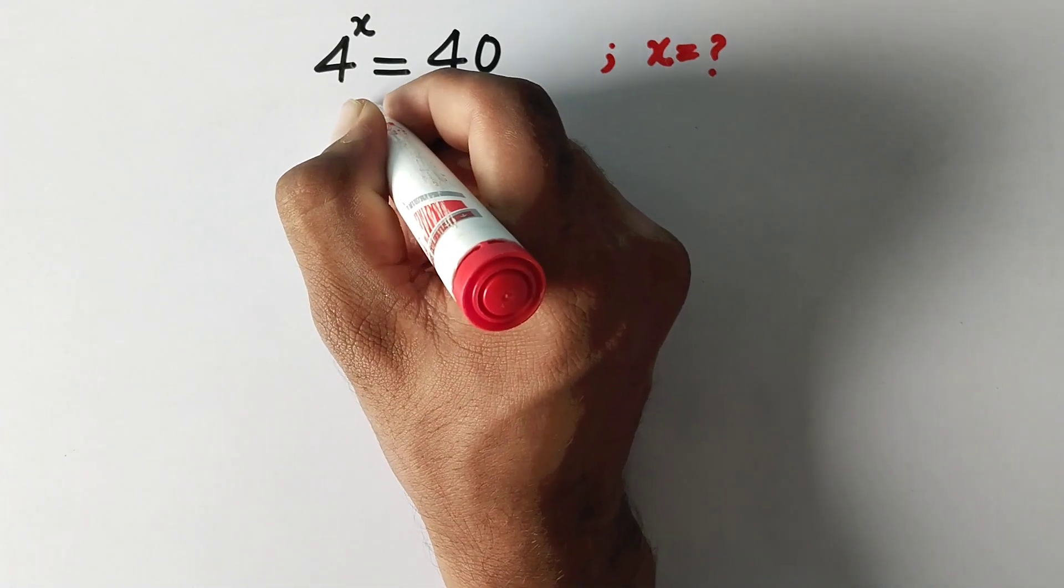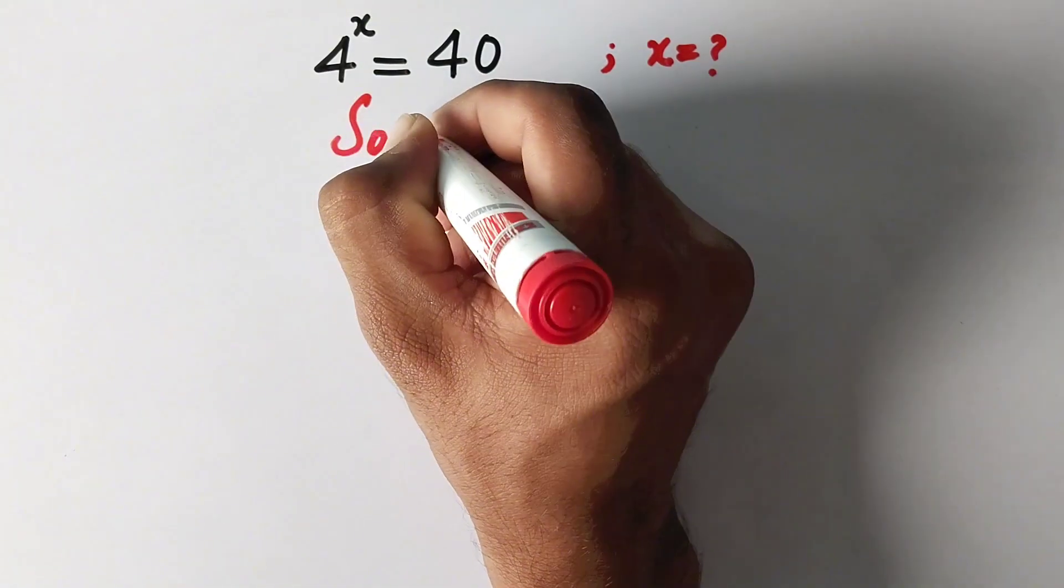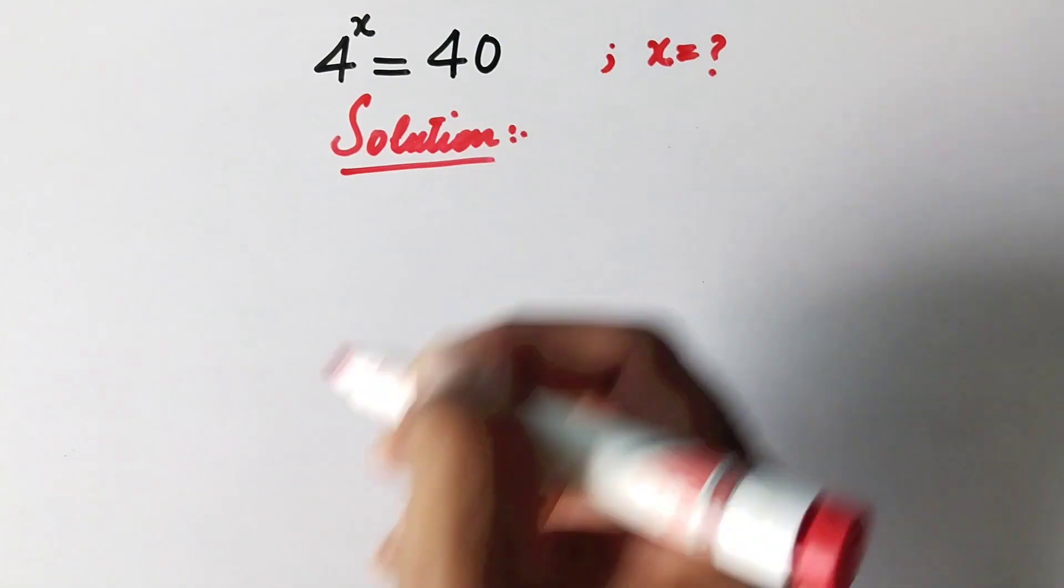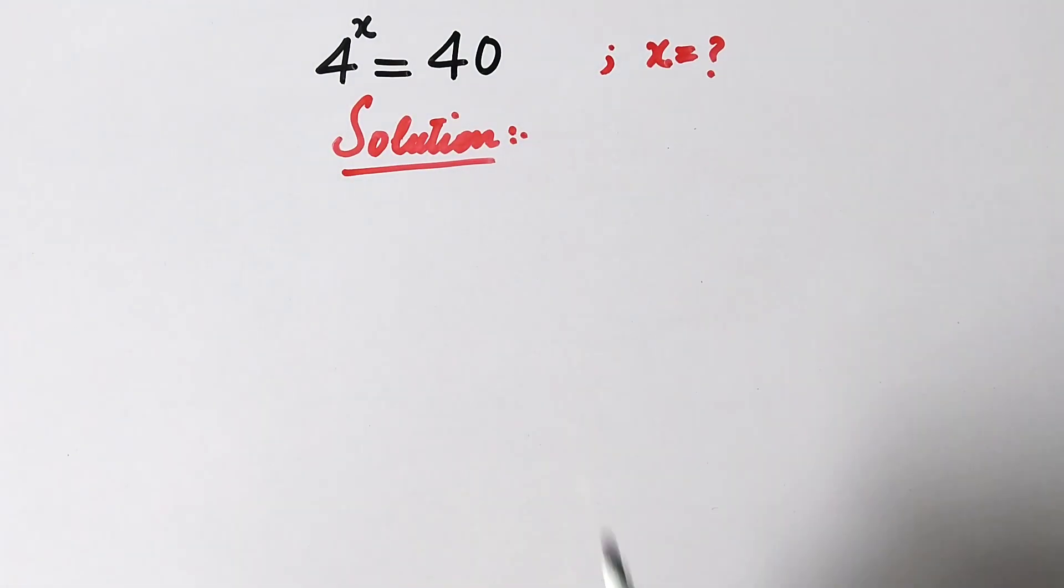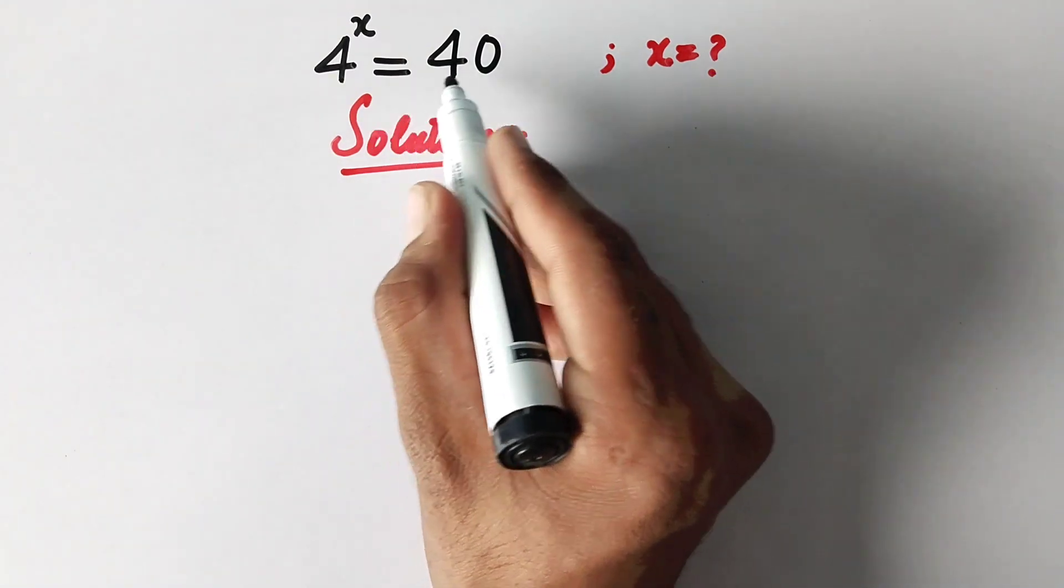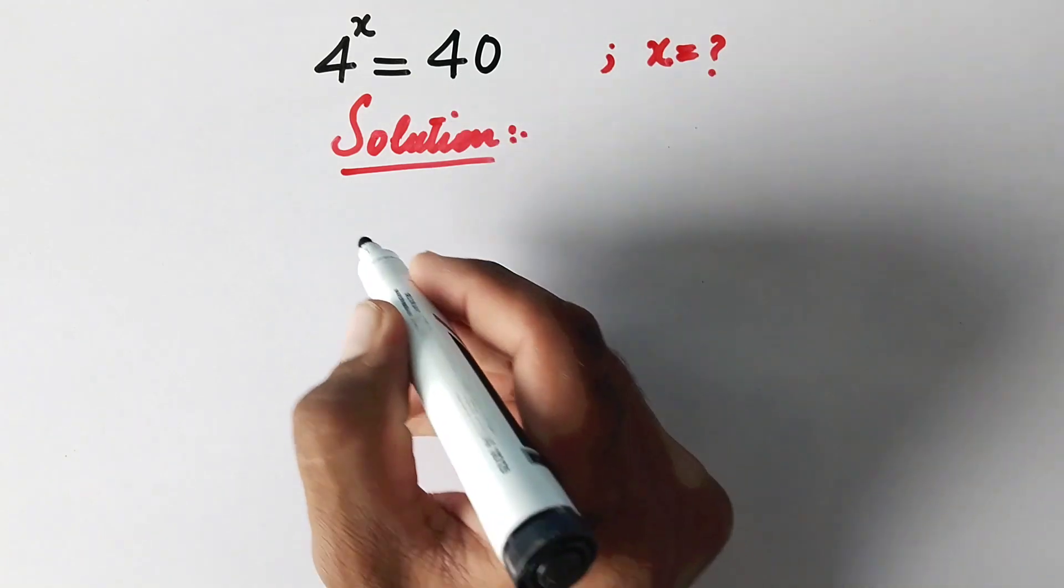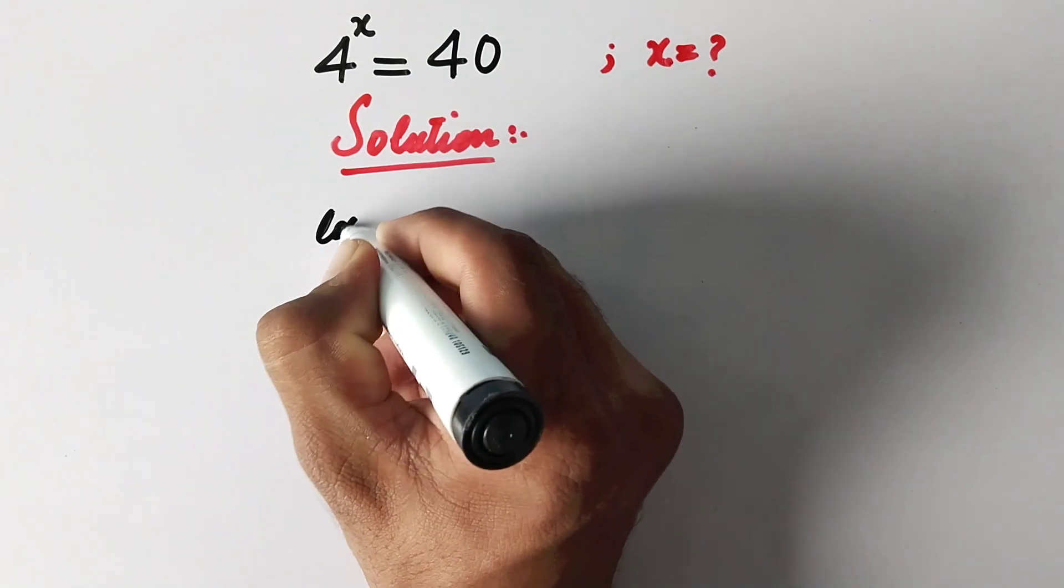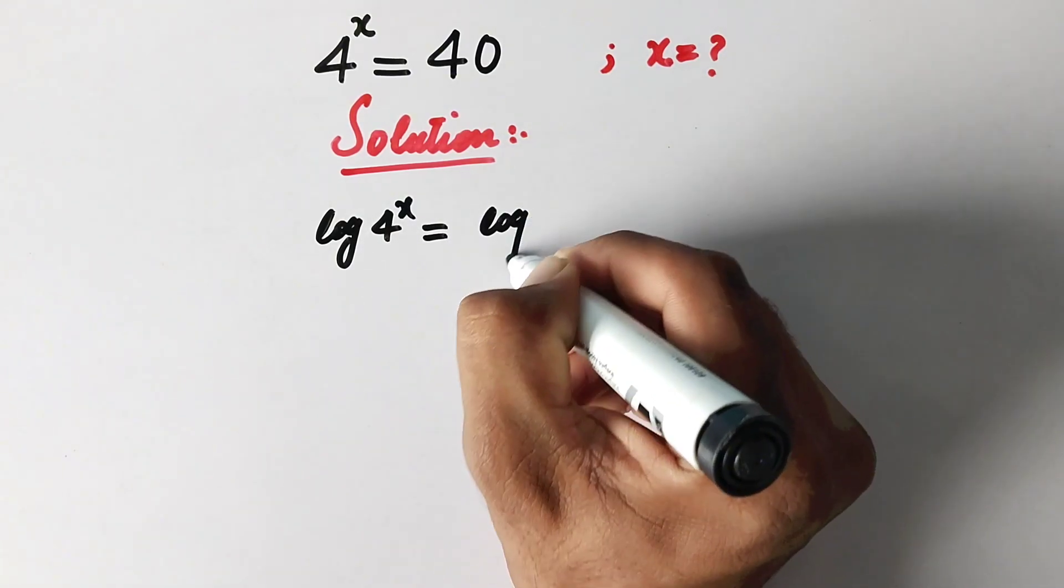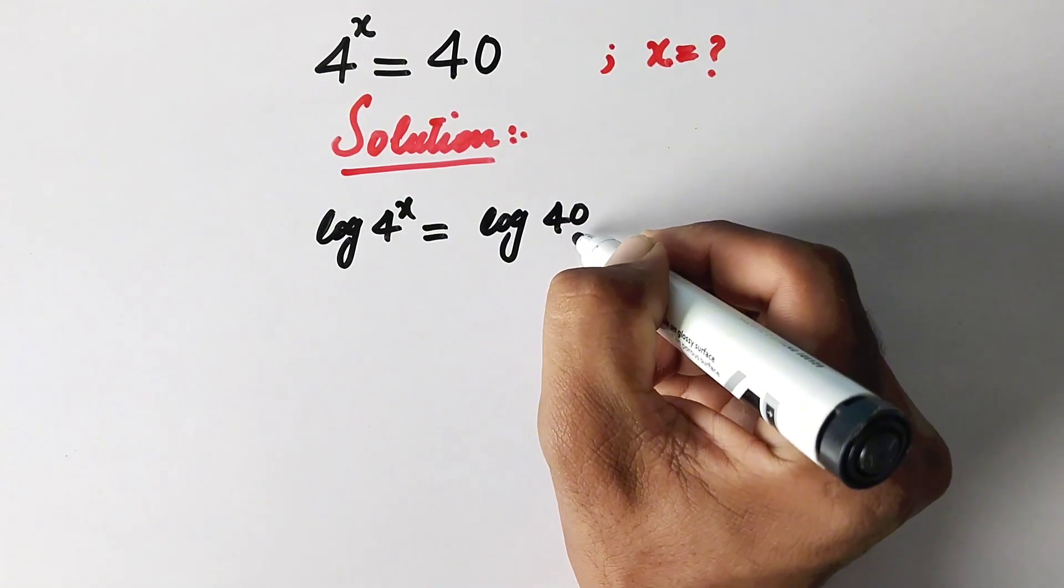Let us see the solution. So here to solve the problem we will take common log on both sides of the equation, so here it will be log 4 to power x is equal to log 40.